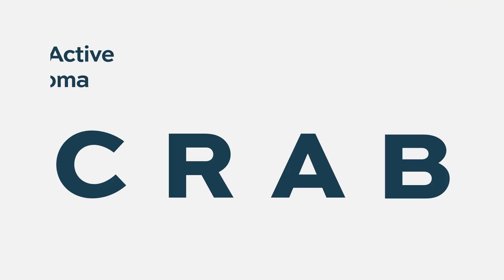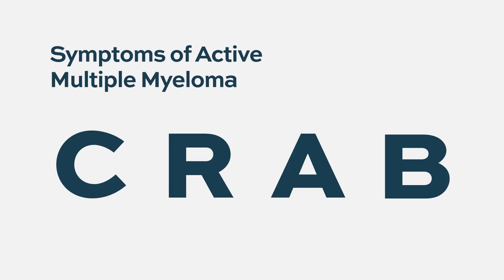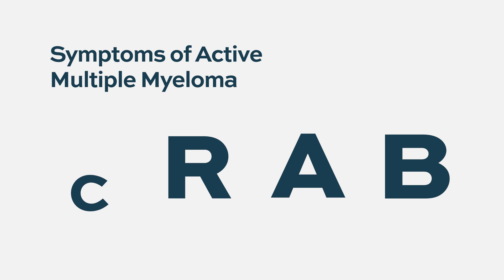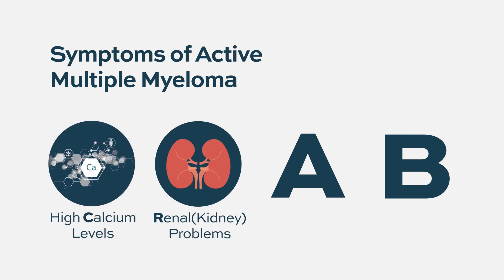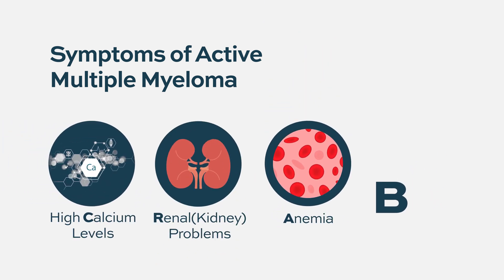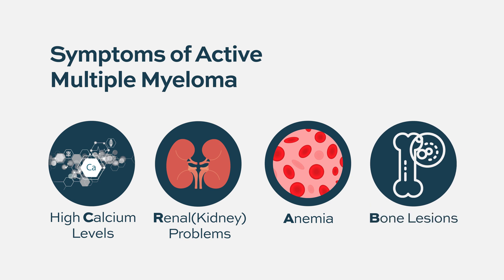In multiple myeloma, there's a classic set of problems or forms of organ injury that can take place — the classic CRAB criteria, as they're called in the medical textbook. It's high blood calcium, renal insufficiency or kidney problems, anemia, and bone lesions. Those are all cardinal classic symptoms of multiple myeloma. When patients have those things, you call it multiple myeloma.